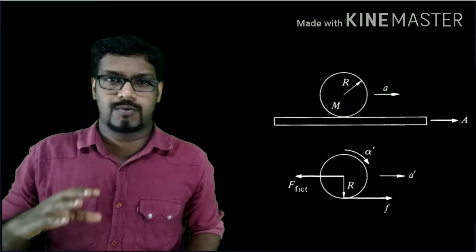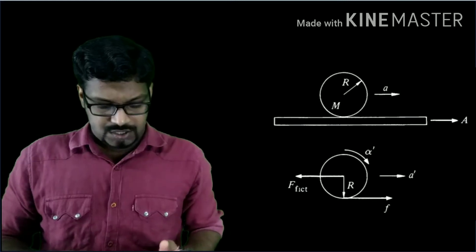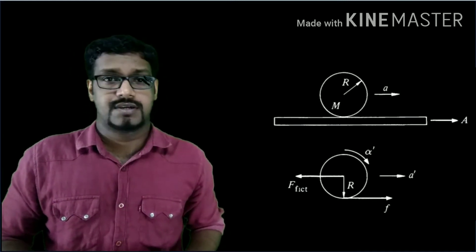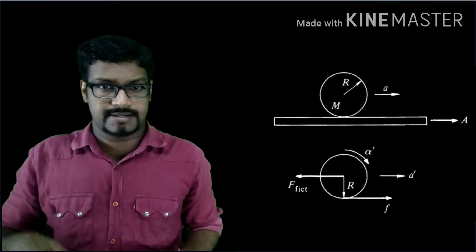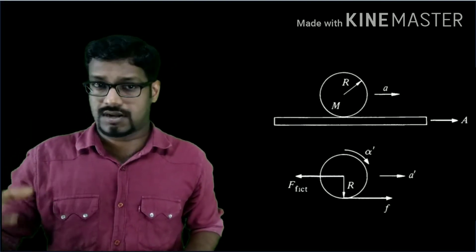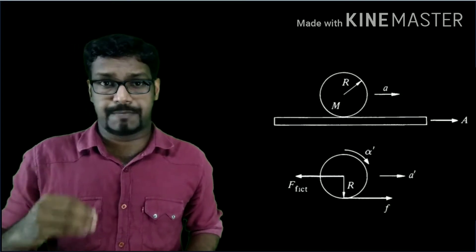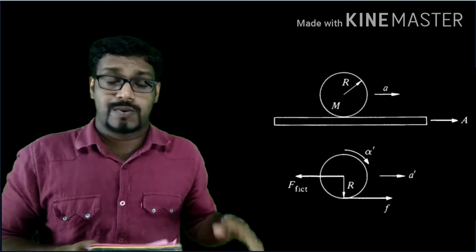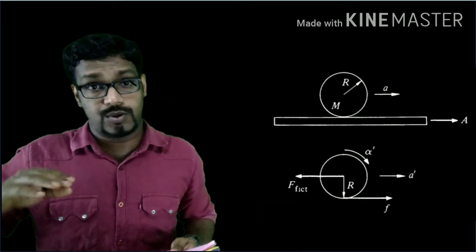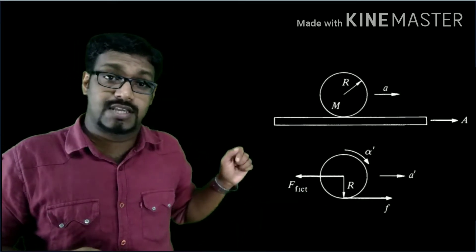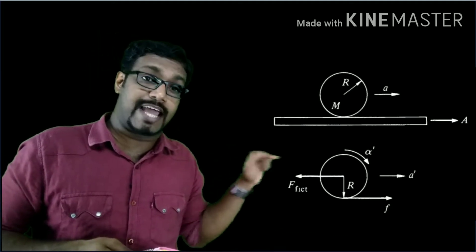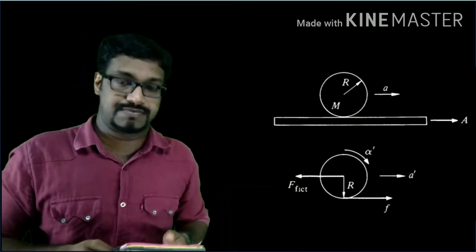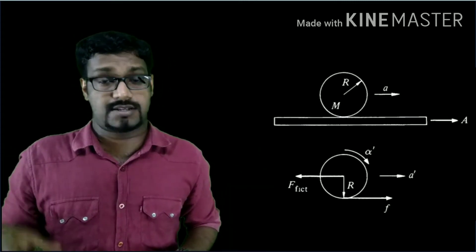Now let's look at the free body diagram of what happens there. We have a cylinder of mass M and radius R kept on an accelerating plank. The plank or the car has an acceleration capital A in this direction. When the car is accelerated, when you observe from outside, you would see the cylinder is also moving in that direction, so the cylinder also has an acceleration in that direction, which we call small letter a.